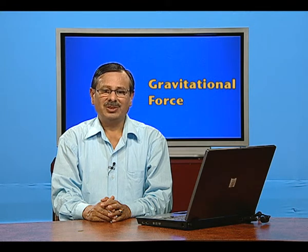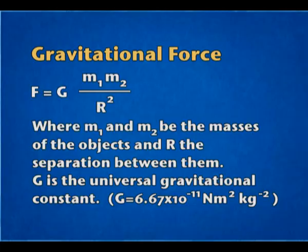This force, in terms of mathematics, is directly proportional to the product of the masses and inversely proportional to the square of the distance. To make the equivalence, we use a constant known as the gravitational constant. The value of this gravitational constant is 6.67 × 10⁻¹¹ Newton meter square per kilogram square, and it is universally constant.